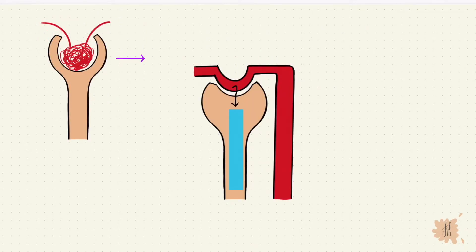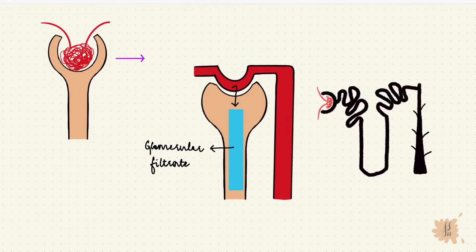The plasma gets filtered through the glomerulus to form the glomerular filtrate, which then passes through the rest of the nephron where processes like reabsorption and secretion happen, followed by excretion.